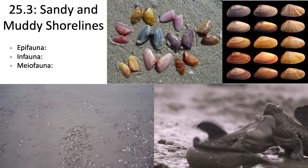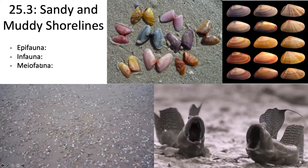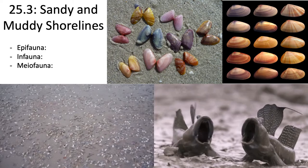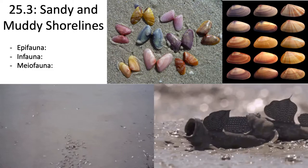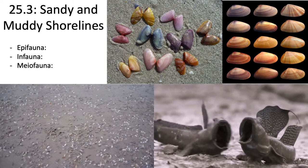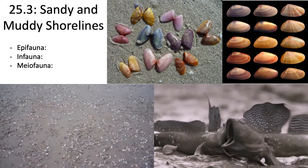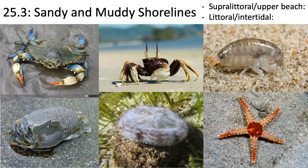Then there's meiofauna — organisms between 0.05 to 0.5 millimeters. This includes things like copepods, ostracods, nematodes, and gastrotrichs. They also bury into the substrate because if they lay on top of the sand during low tide, they'll get desiccated. Copepods from my tank would be an example of meiofauna that live in sandy and muddy shorelines.